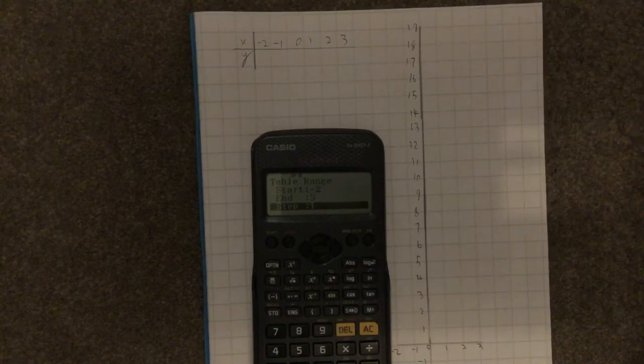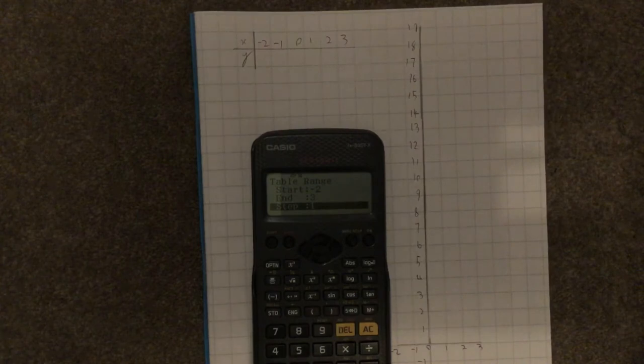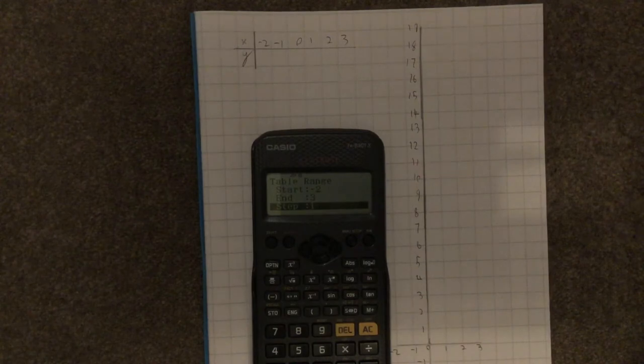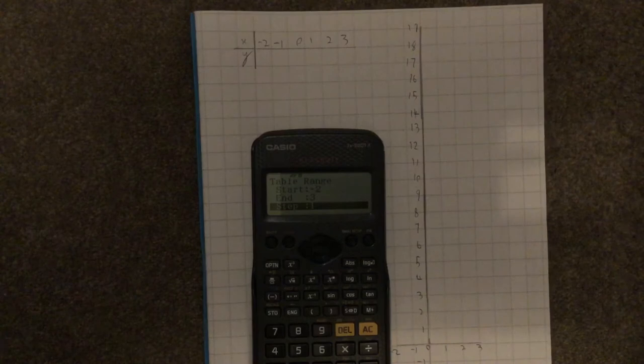And we can go up in a step of 1. Now, if you were to change the step, that would change what you go up in. If you entered in 2, it would go up in 2s. We don't need to go up in 2s, we need to go up in 1s. If you needed to find a decimal value, you could go up in 0.5 or 0.1 or whatever you need. Here, we can press equals.